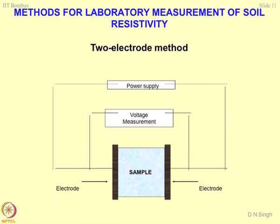The simplest possible method is the two-electrode method. You take a sample of a geomaterial, place it between two metal electrodes, apply a power supply, and measure the voltage across it. Depending upon the voltage and current passing through the circuit, you can find out its resistance. Knowing the area of cross-section and the edge-to-edge distance between the electrodes, you can use the equation ρ = R · L/A to get the resistivity.